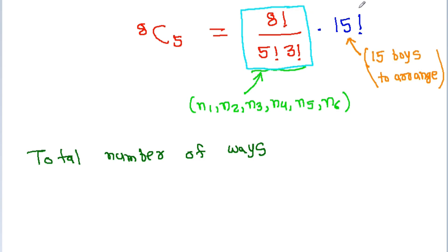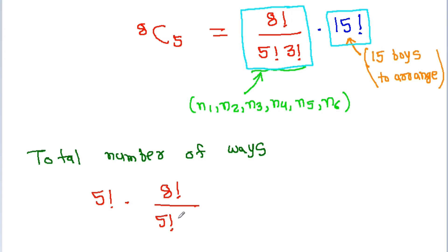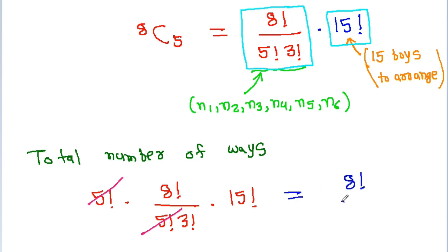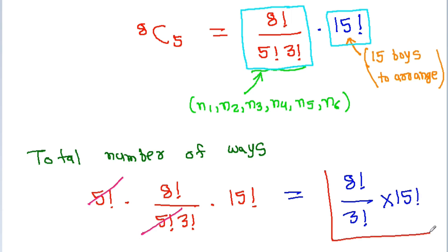The 5! in the numerator and denominator cancel, giving us 8! × 15! / 3!, which confirms our answer from Method 1.